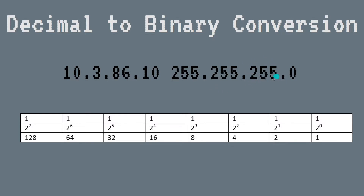128 plus 64 plus 32 plus 16 plus 8 plus 4 plus 2 plus 1 equals 255, so that would be all ones in binary. That's the same case for each 255 octet. For the fourth octet — zero — if we convert it to binary, are there any ones? The answer is no, we don't add anything. There would actually be eight zeros. Does that make sense? Let me know in the comments.